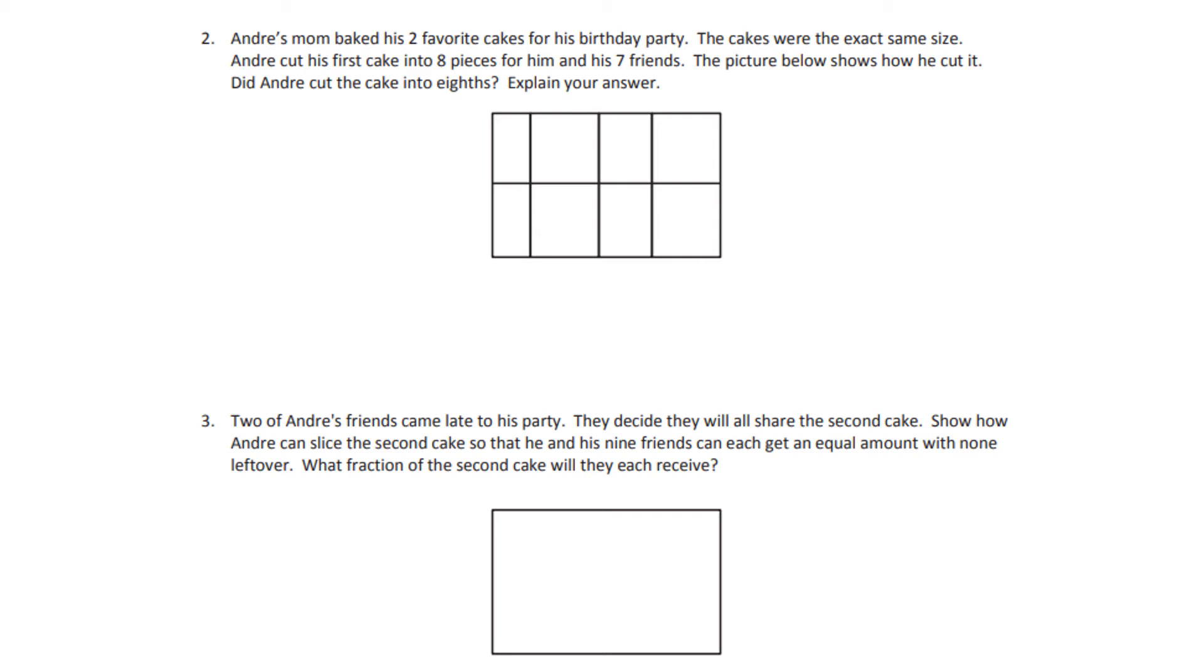Two of Andre's friends came late to his party. They decided they will all share the second cake. Show how Andre can slice the second cake so that he and his nine friends can each get an equal amount with none left over. What fraction of the second cake will they receive? Now I want you to remember one thing with this. All right, we know that it's Andre and we have nine friends. So that doesn't mean you're going to split this into nine pieces. You actually need to split it into ten pieces. I'm going to give you some time to work on both these problems.